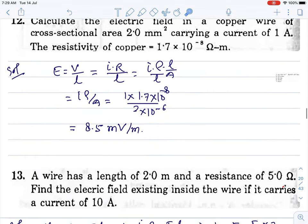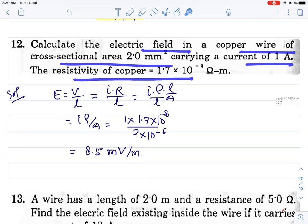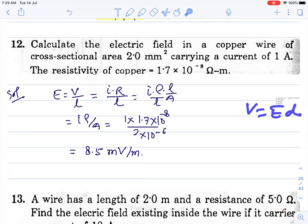Question number 12. Calculate the electric field in a copper wire of cross-sectional area 2.0 mm² carrying a current of 1A. The resistivity of copper is 1.7 times 10^-8 ohm-m. So the electric field is given as a potential gradient formula, E equals V by L. We call it Ohm's law formula.